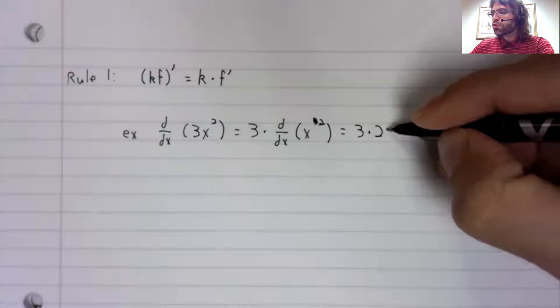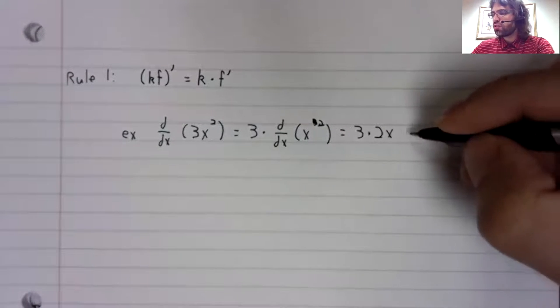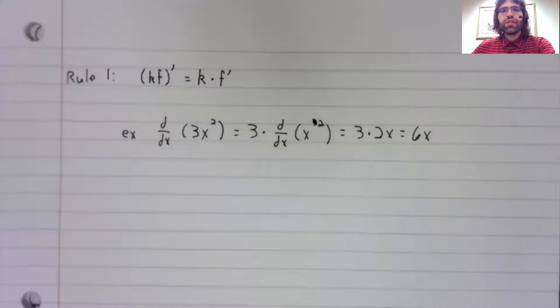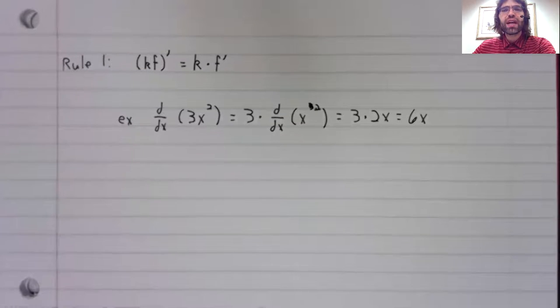Using the power rule, the derivative of x² is 2x, and this derivative is therefore 6x.